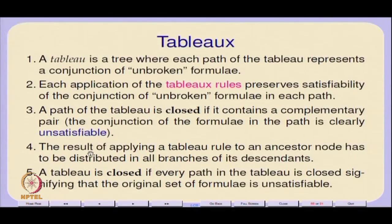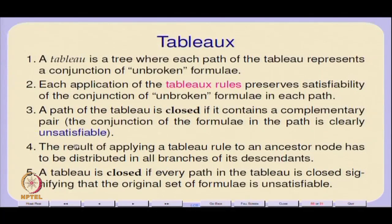In the case of branching, if I take some ancestor node which is a common ancestor of two branches, and I break up that ancestor, I have to replicate the denominator on all branches. The result of applying a tableau rule to an ancestor node has to be distributed to all branches of its descendants. A tableau is closed if every path in the tableau is closed, essentially signifying that all paths are unsatisfiable. Let us take the example we did previously.